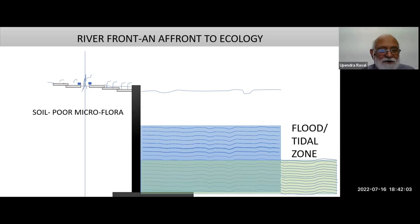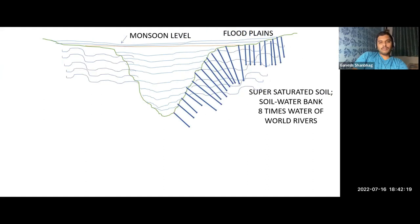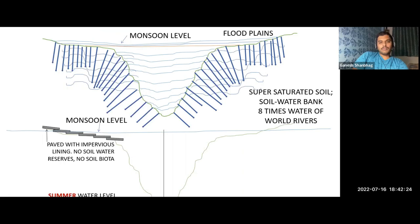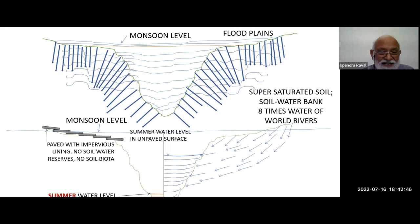Now we are going to riverfront. All the riverfront shorelines are paved, concretized. This vertical line in the middle of the tree is the original reference point. Monsoon level paved with impervious lining — no soil. Summer level is gone. In natural soil with natural shoreline, the flow is reversed — subsoil moisture flow is reversed.